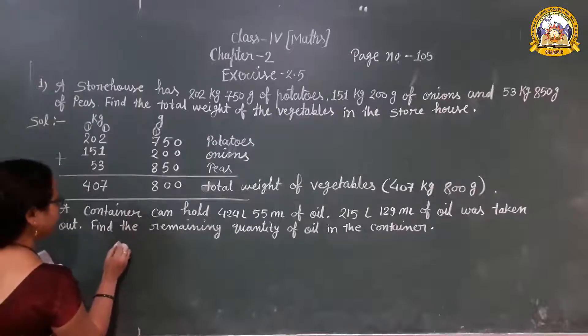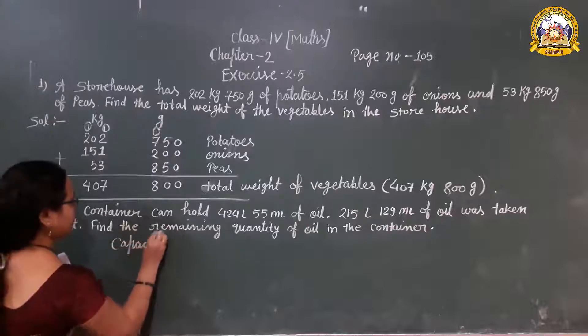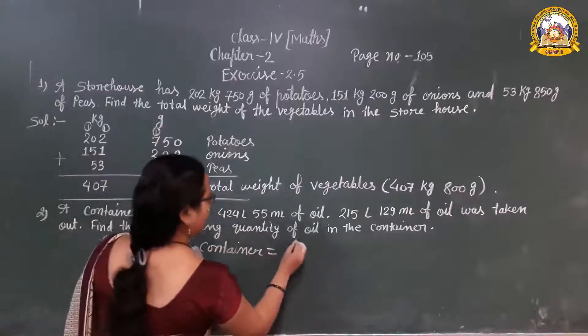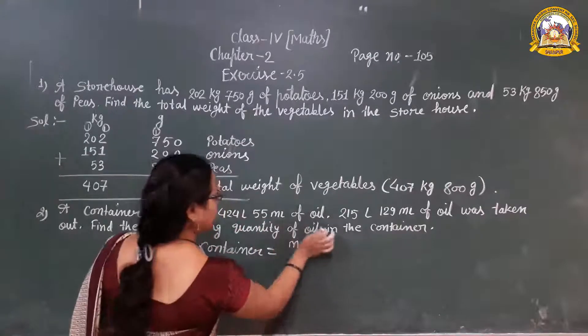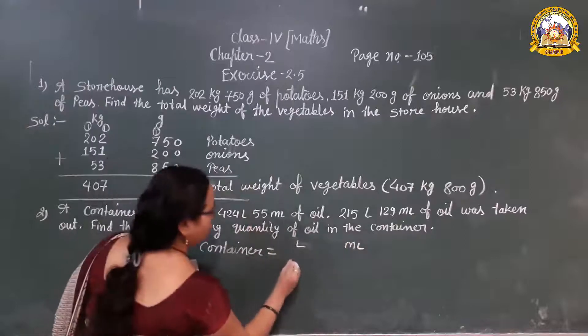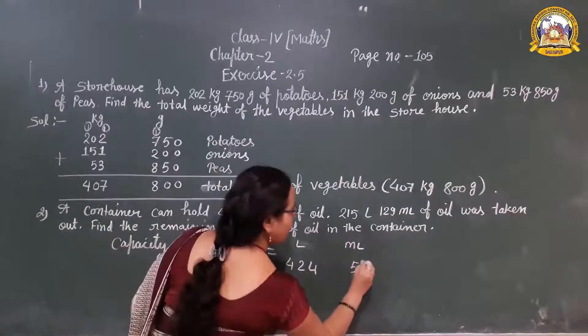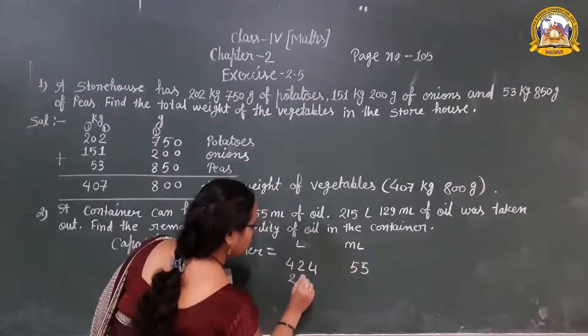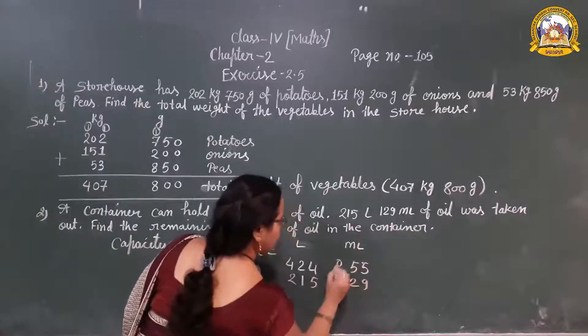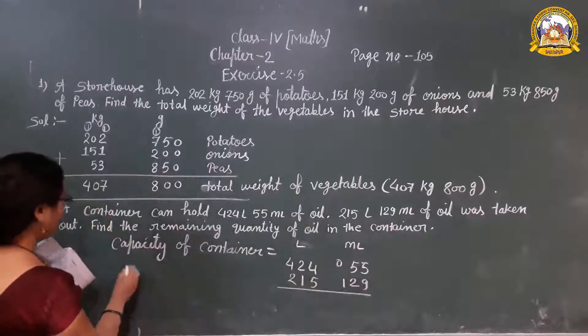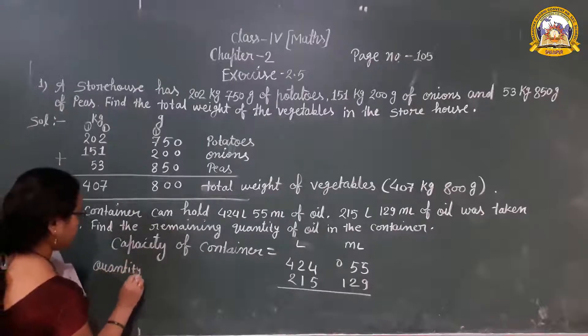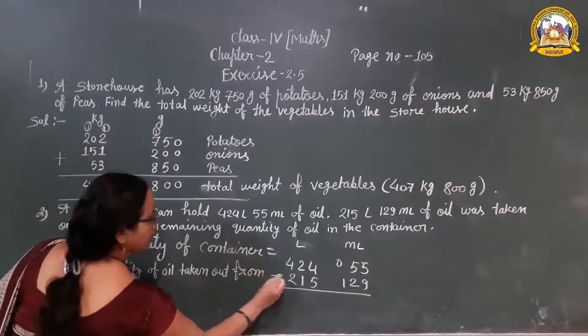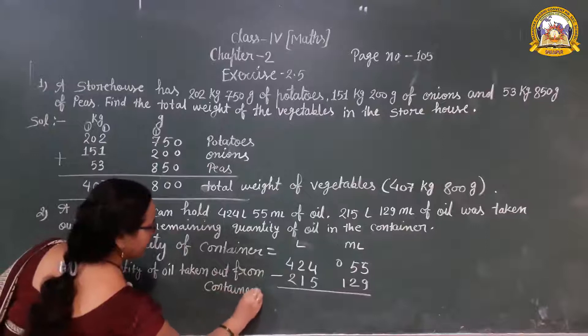So first one, capacity of container is equal to—write the unit on the top: liter and milliliter. 424 liter 55 milliliter. How much quantity of oil is taken out from the container? So, quantity of oil taken out from container. Now, simple subtraction.